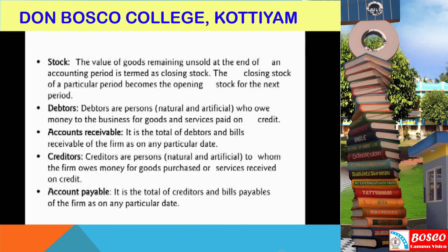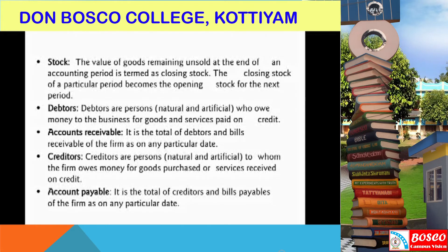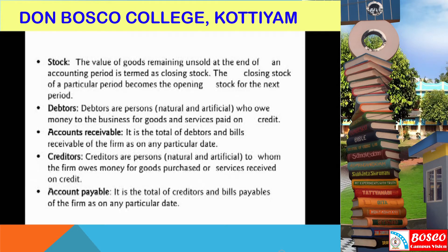Accounts receivable covers debtors and bills. The next term is creditors. Creditors are persons to whom the firm owes money for goods purchased or services received on credit. They are called creditors — both natural creditors and artificial creditors.